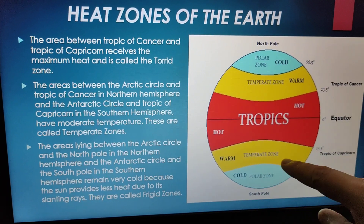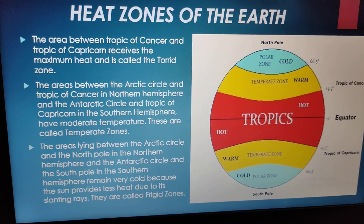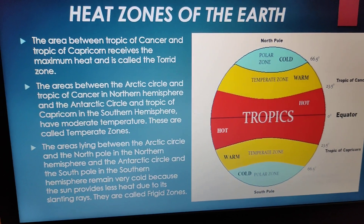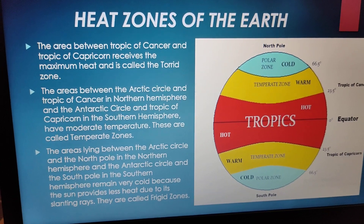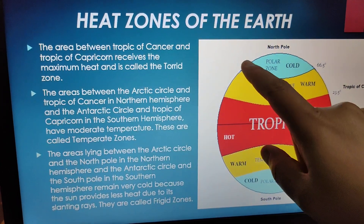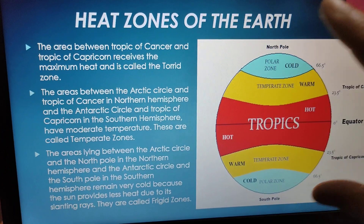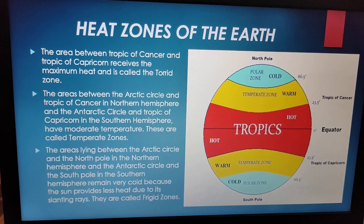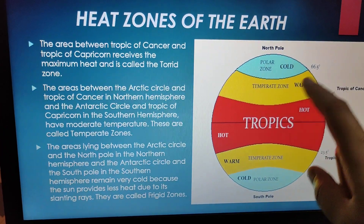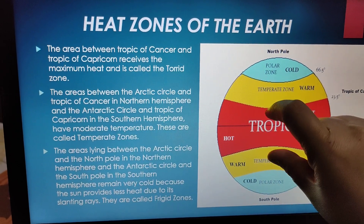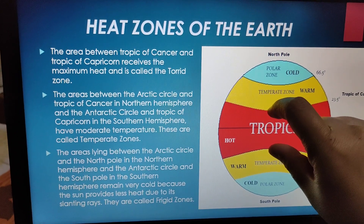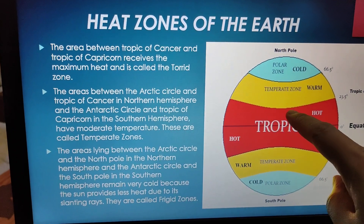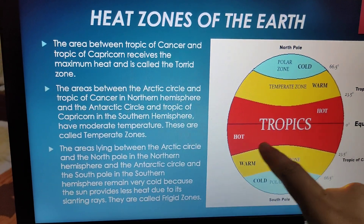The temperate zone receives sun rays that are enough to maintain a warm environment. The cold or polar zone receives very little sunlight, and in many cases doesn't receive sunlight at all. This is your frigid zone — it remains frozen throughout the year. The area between the Tropic of Cancer and the Tropic of Capricorn receives the maximum heat and is called the Torrid zone.